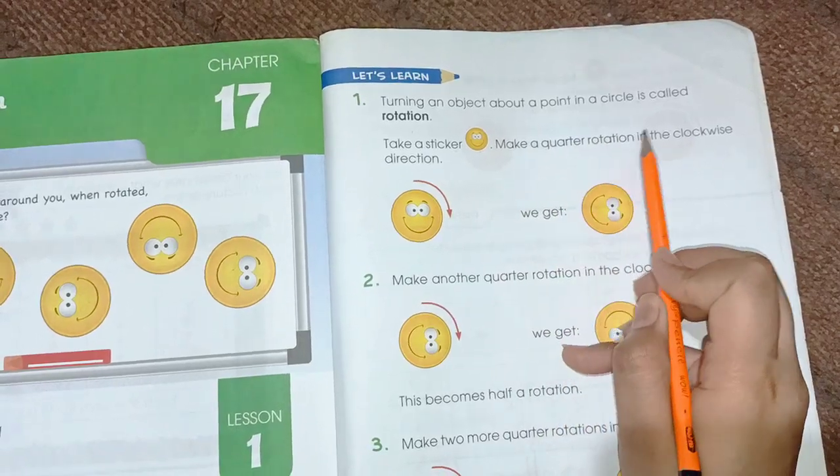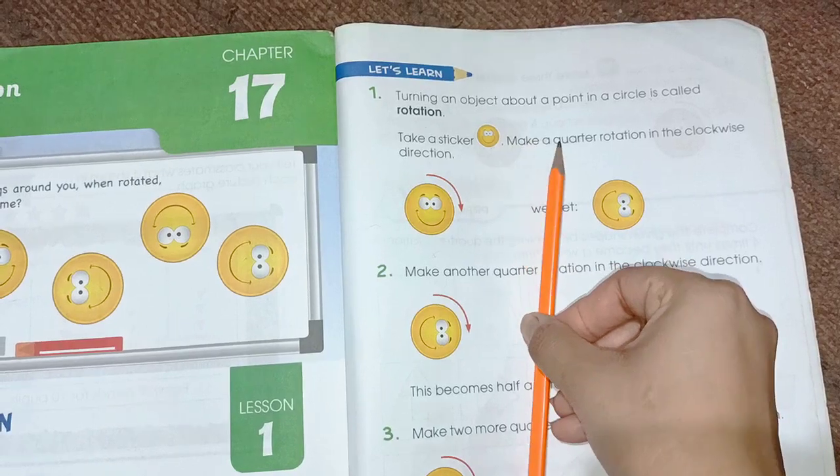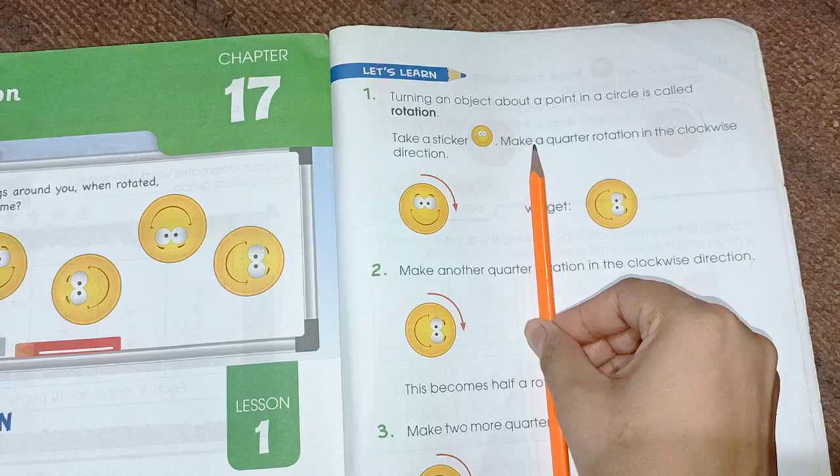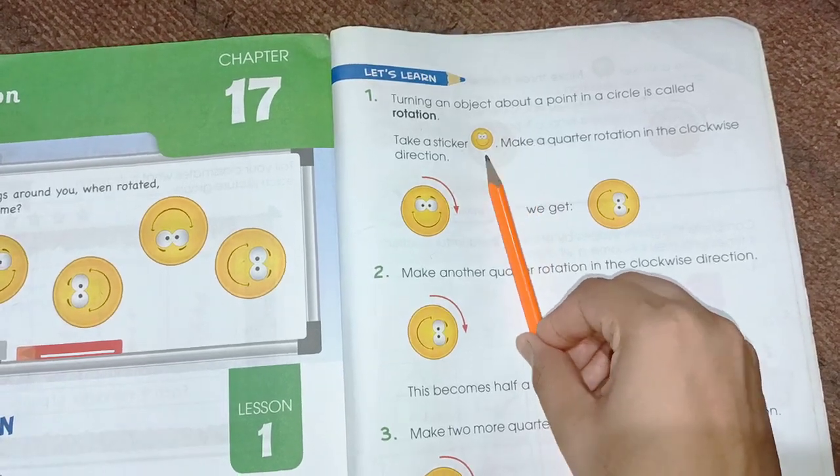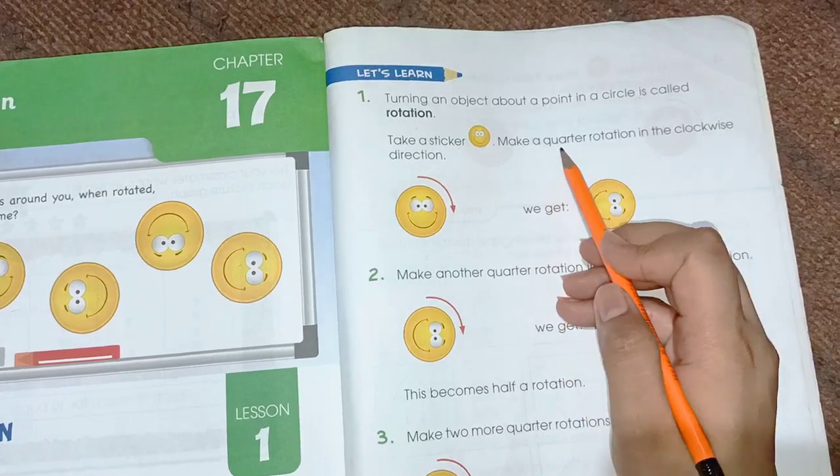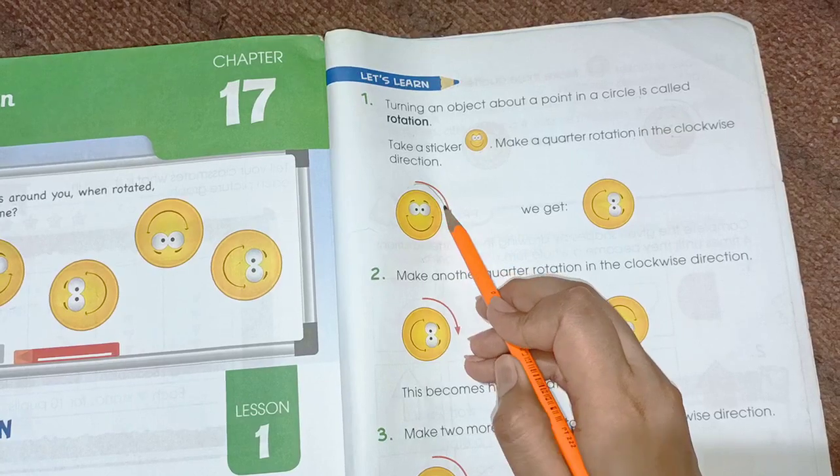make a quarter rotation in the clockwise direction. Clockwise means like here - tick, tick, tick. This is the clockwise direction. And here we have the anticlockwise, which means tick, tick, tick in the opposite direction. So make a quarter rotation in the clockwise.